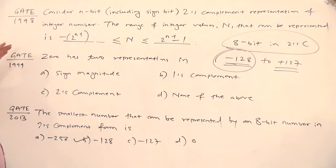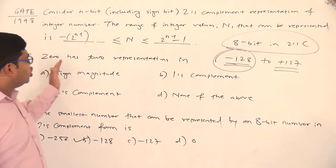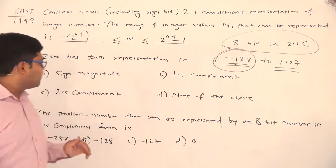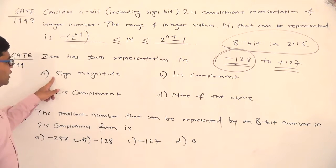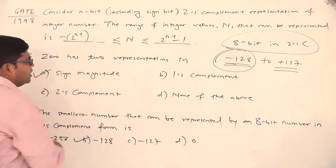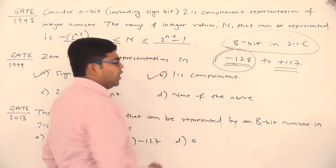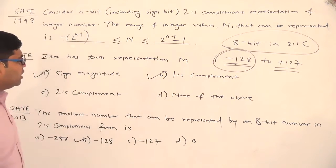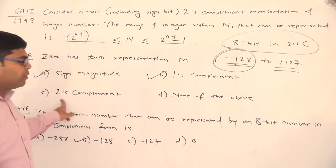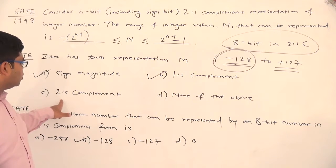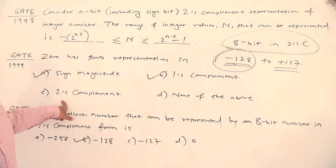And finally, one question from GATE 1999 which says 0 has two representations in and the options are sign magnitude, one's complement, two's complement and none of the above. Now, we have seen earlier that 0 has two representations in sign magnitude as well as in one's complement. So both the answers are correct, none of the above is wrong and two's complement is absolutely wrong because two's complement has got unique representation for 0.